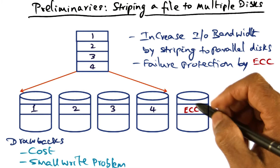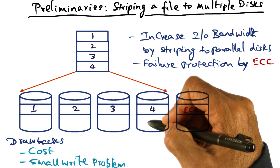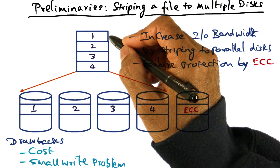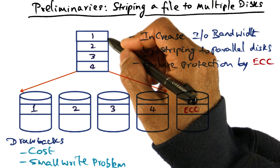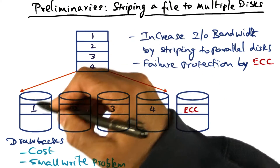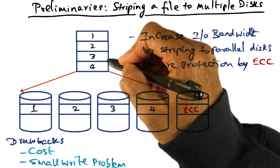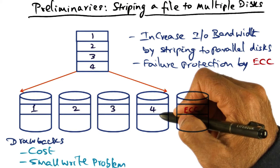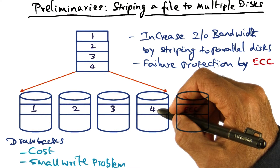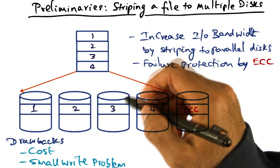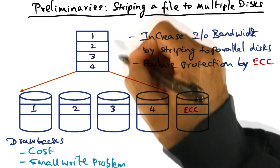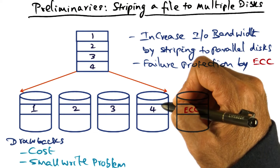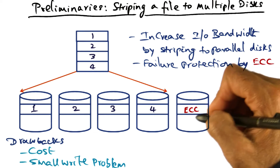The basic idea is that when you write a file, you do the following. You take a file — let's say this file has four parts to it. When I write this file, I'm going to write part one to this disk, part two to this disk, three to this, and four to this. Because my data is on multiple disks, I'm also increasing the chance that there may be failures that can hurt me. Therefore, we compute a checksum for this particular data stored on these disks and store that in a fifth disk.